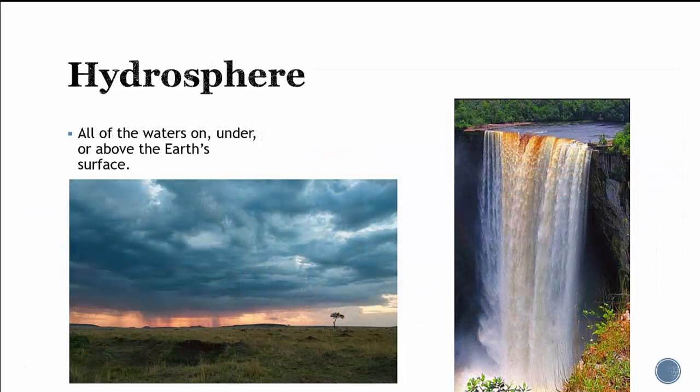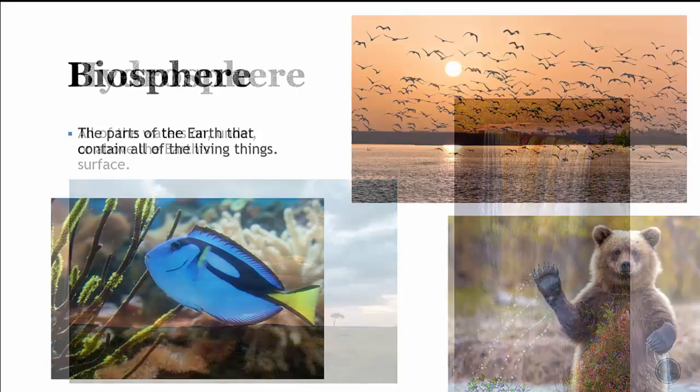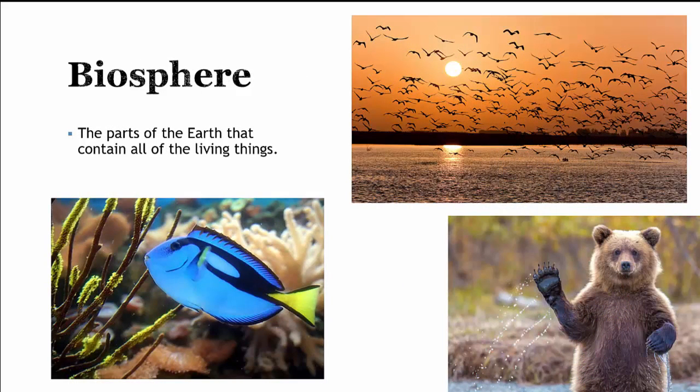The hydrosphere is just all the water on, under, or above the Earth. That contains the clouds, the precipitation—whether it be rain or snow—in solid or liquid form. It contains all the surface water and all the underground water.